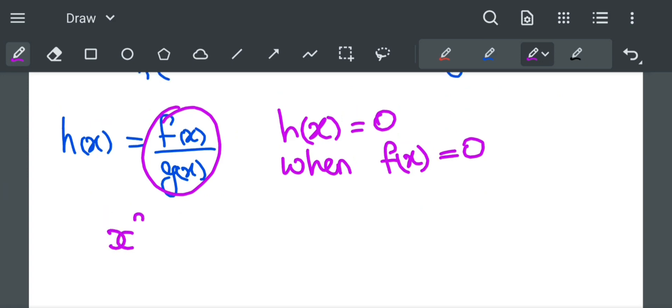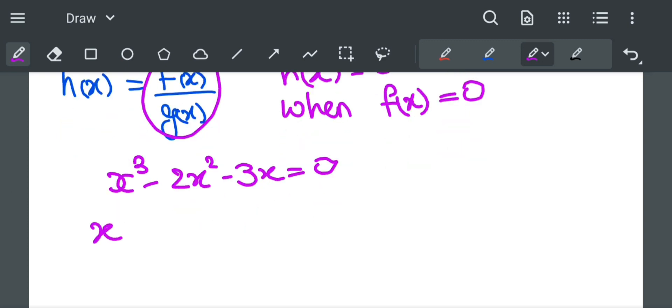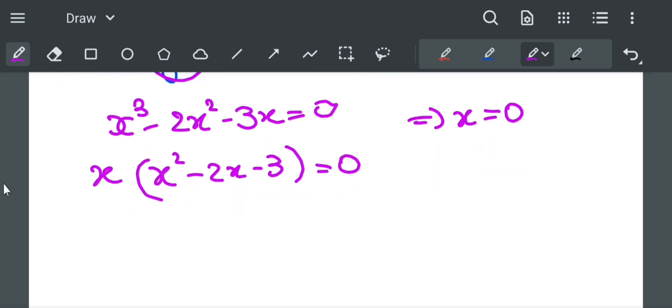So x cube minus 2x square minus 3x is equal to 0. We can take x common: x times x square minus 2x minus 3 is equal to 0. It implies that f of x equal to 0 when x equal to 0 and the remaining two values are